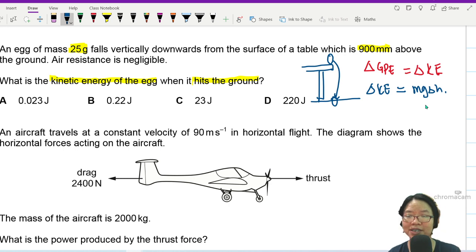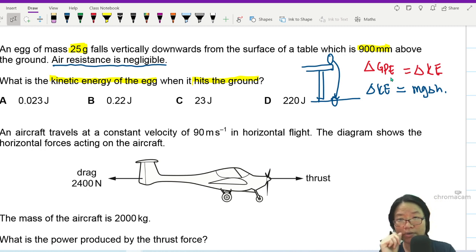So all the GPE is converted to KE because air resistance is negligible. So the change in KE will directly be equal to the loss in potential energy. We can find the loss in potential energy.